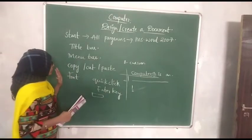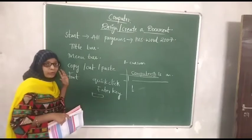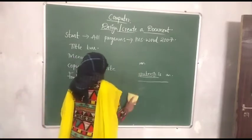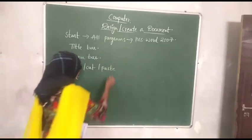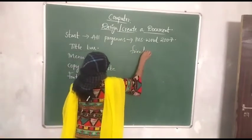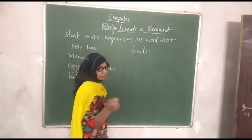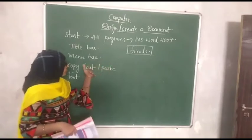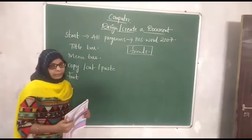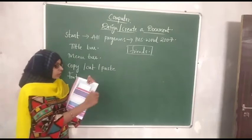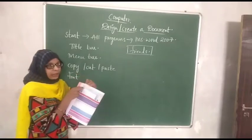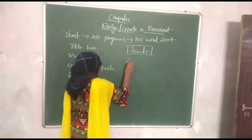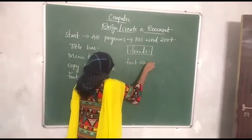Let us suppose you are creating a document about your friends, collecting some information. Write the heading 'Friends' first. Move your cursor to the center and write the heading there. Since this is the heading, you want to make it bold. To make it bold, take your mouse and click on B — B means Bold. If you click on Bold, the text will get bold.